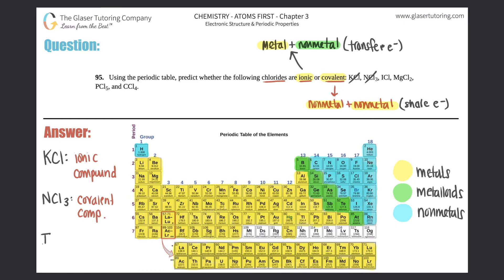ICl: we know where chlorine is on the periodic table. Iodine is two elements down from chlorine — element number 53. They're both nonmetals, so ICl has to be a covalent compound. When these elements come together, they will share electrons.